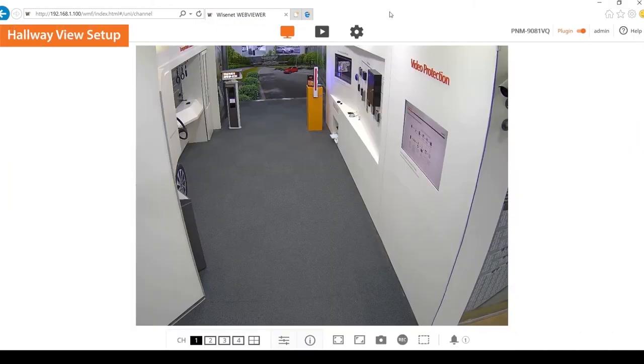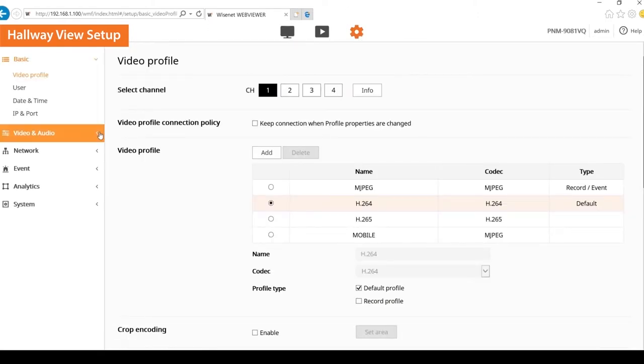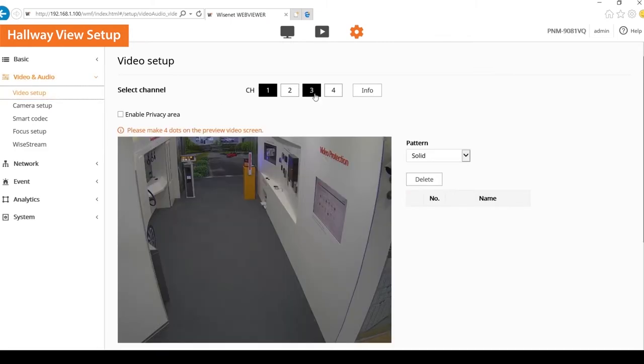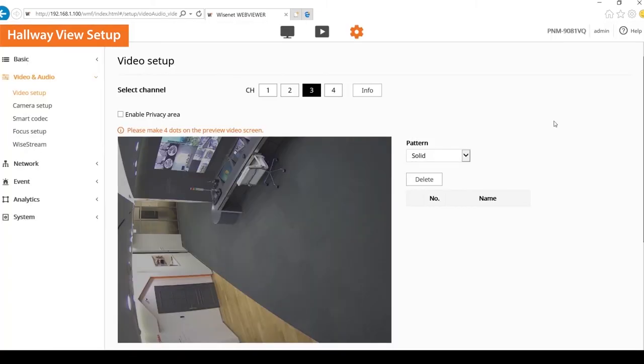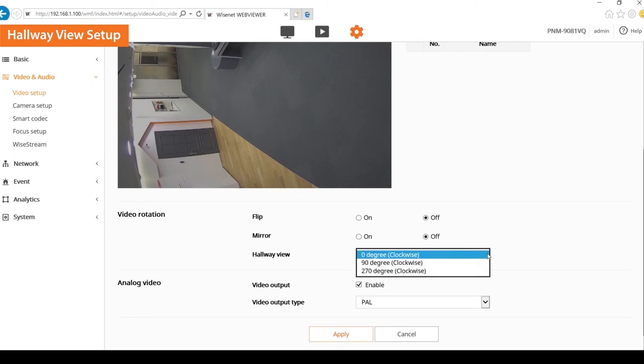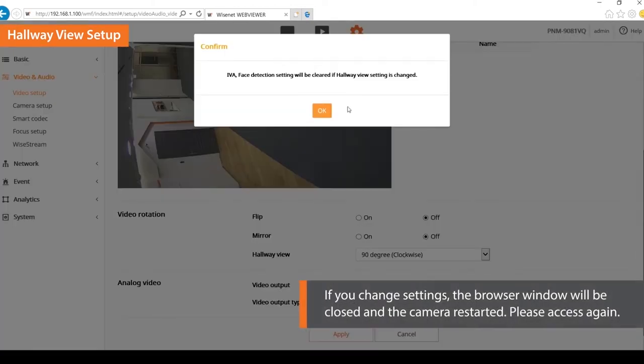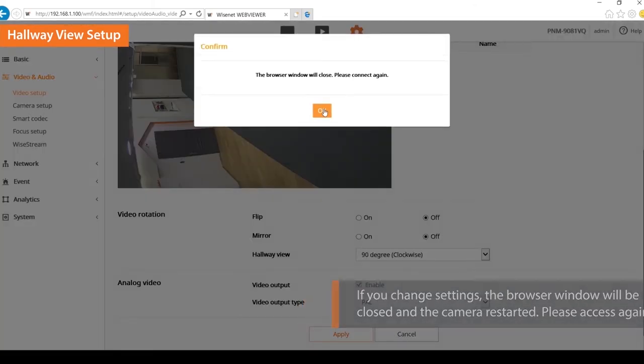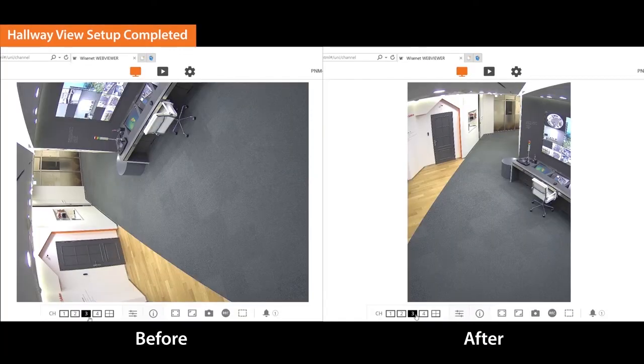Select the settings icon at the top. Then click the video and audio menu on the left. Click the video setup and select channel 3. Select the hallway view under video rotation mode. Select 90 degree to apply. You can rotate the captured video by the camera to 0, 90 or 270 degrees. If you change settings, the browser window will be closed and the camera restarted. Please access again. Hallway view has been set successfully.